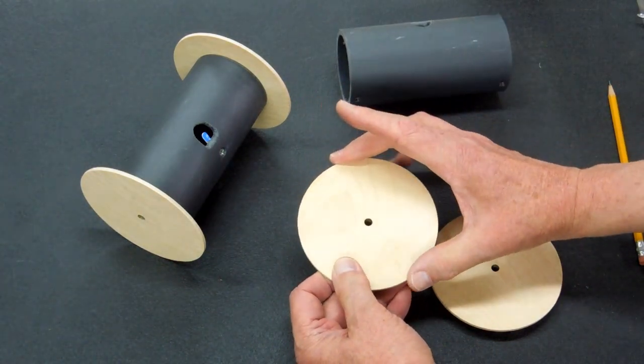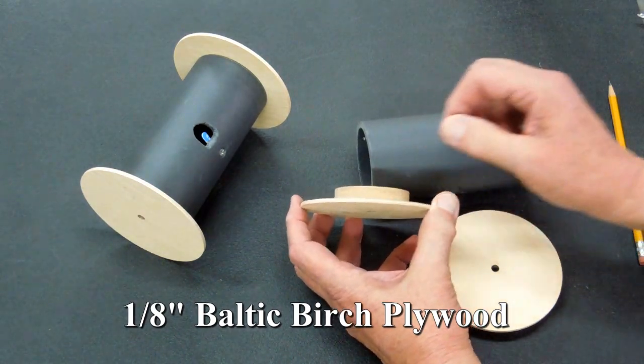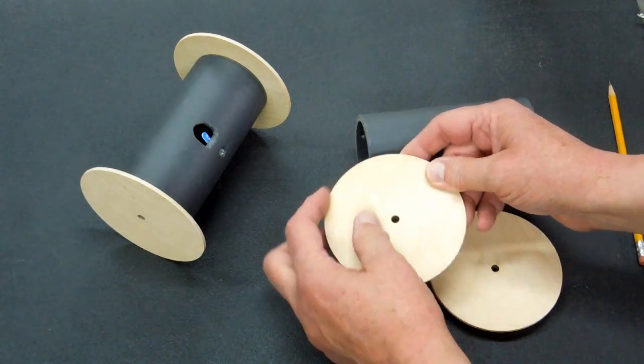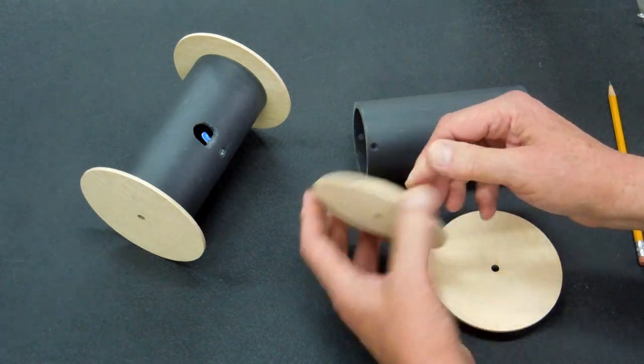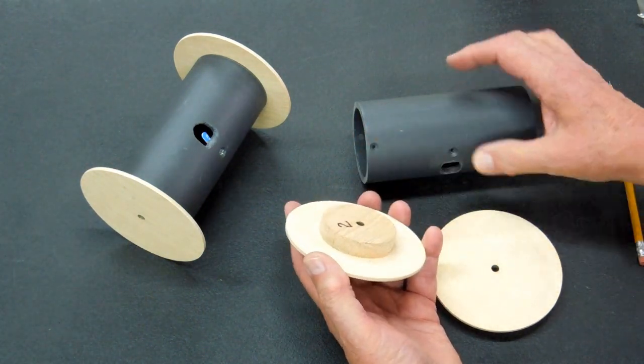These are four and a quarter inch diameter, eighth inch plywood. Again, sanded accurately on the circle sanding jig on the disc sander and glued to that piece of hardwood.